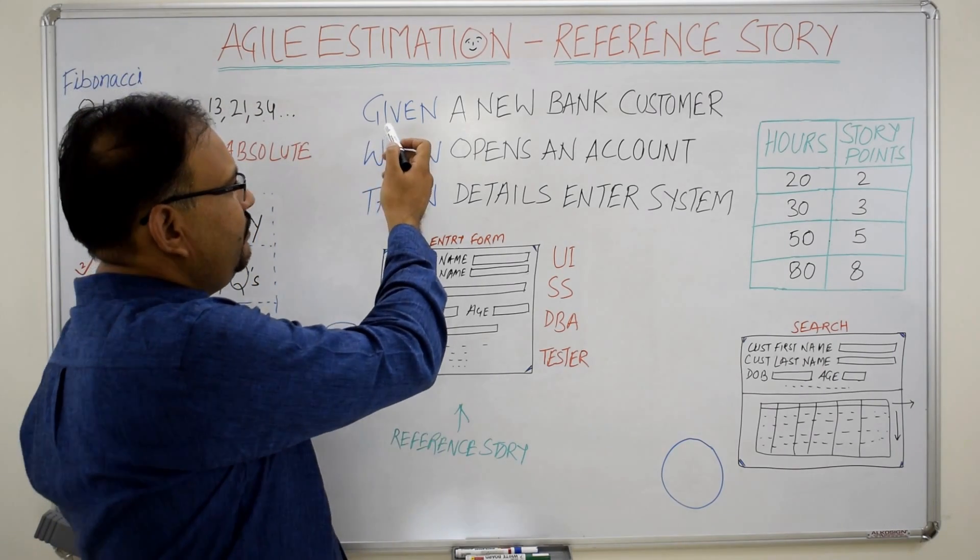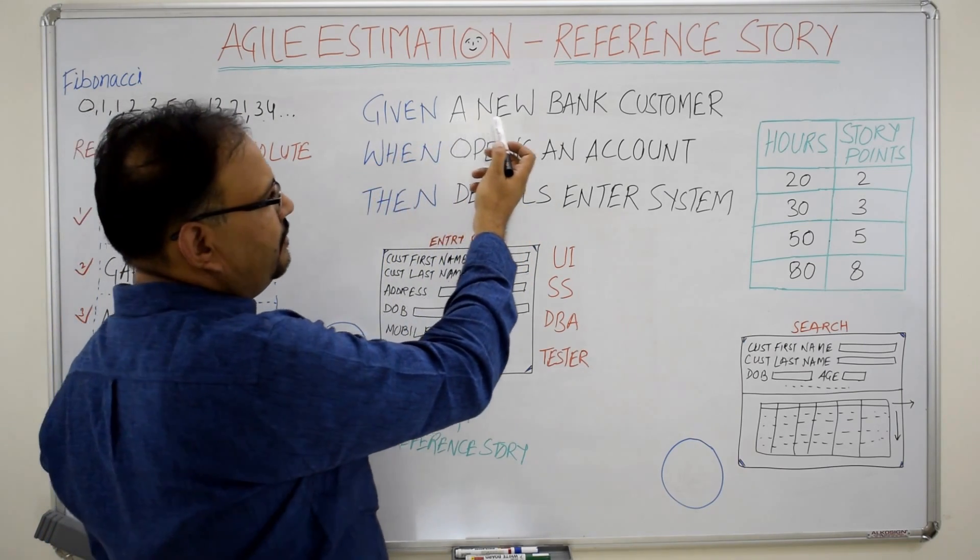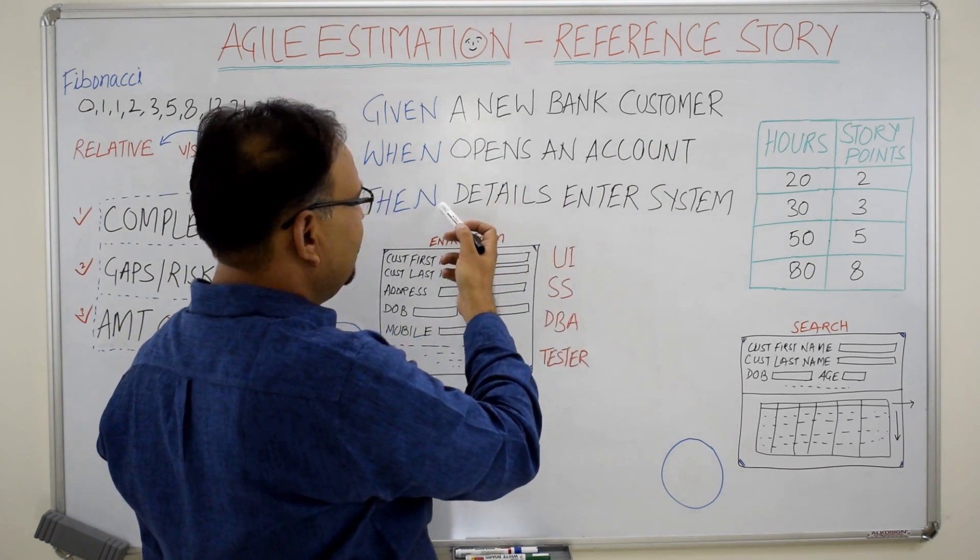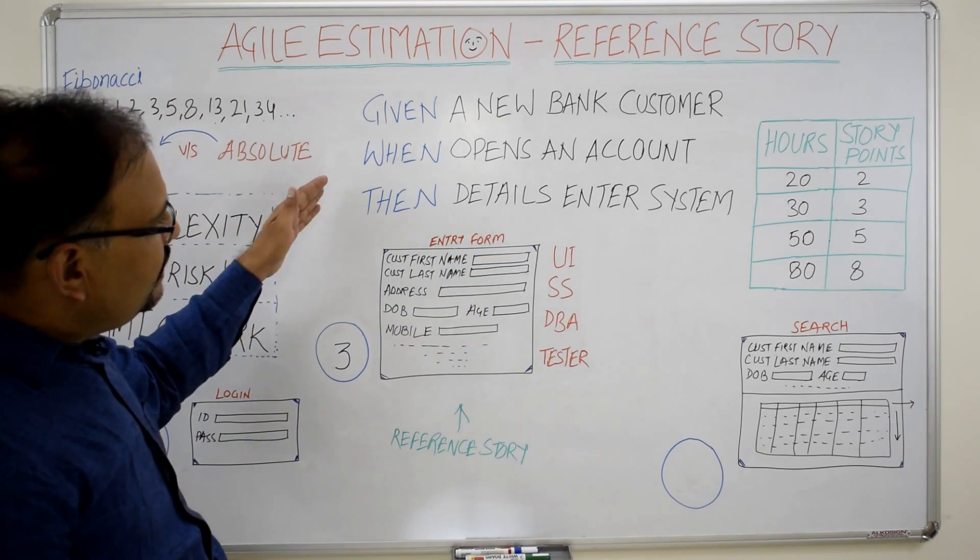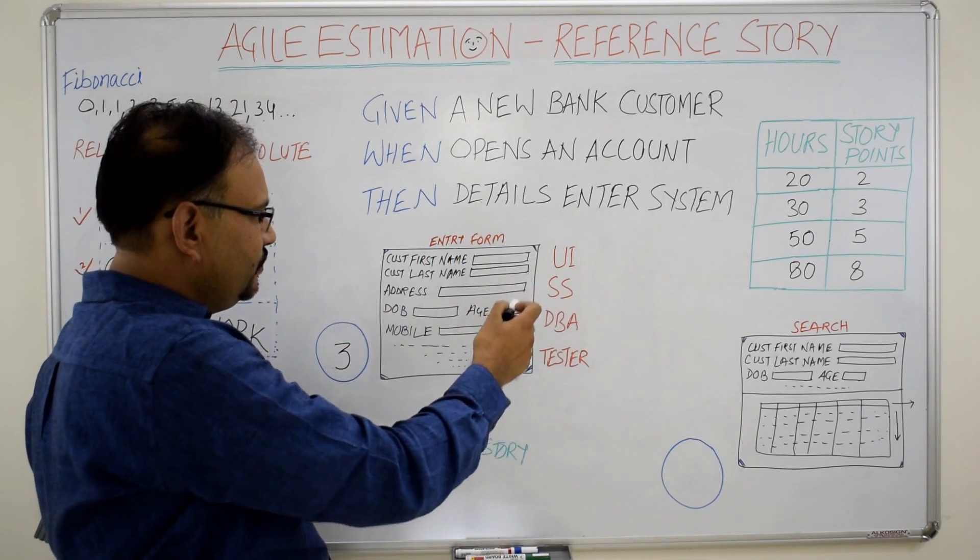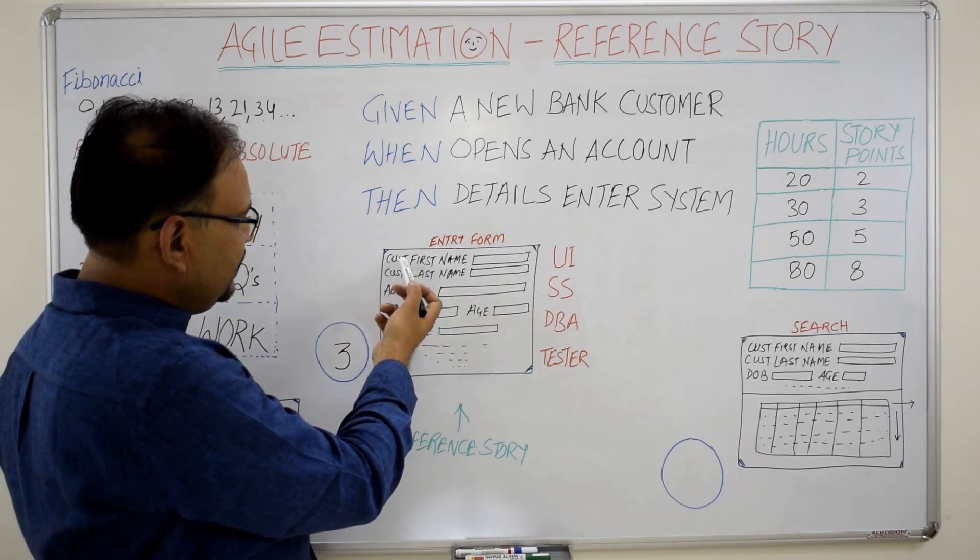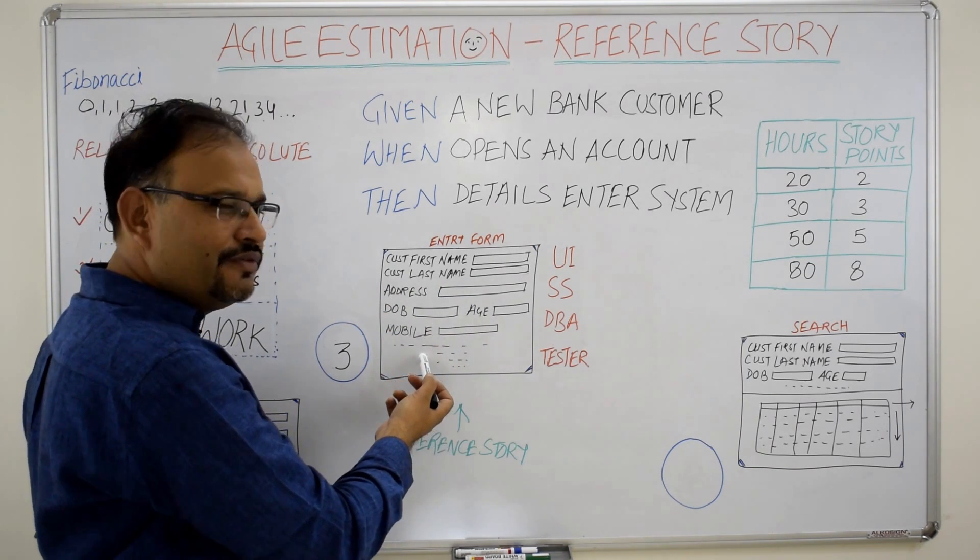This is a simple story which can be taken up as a reference story. It reads: given a new bank customer when opens an account, then details are entered in the system. Now we can visualize this story as an entry form like this, which is having customer first name, customer last name, address, date of birth, age, mobile and few other fields.